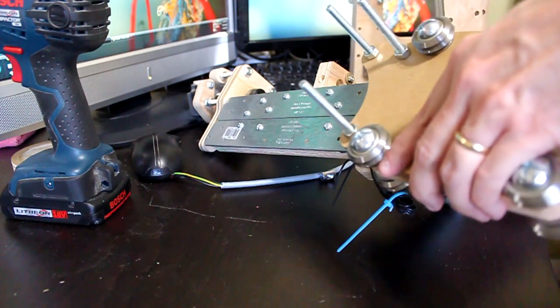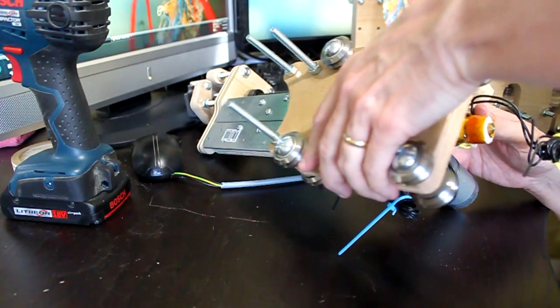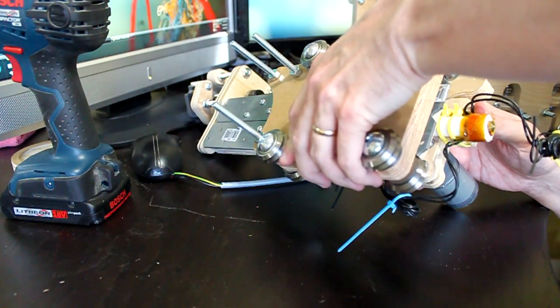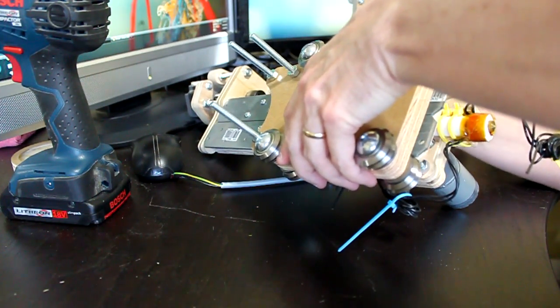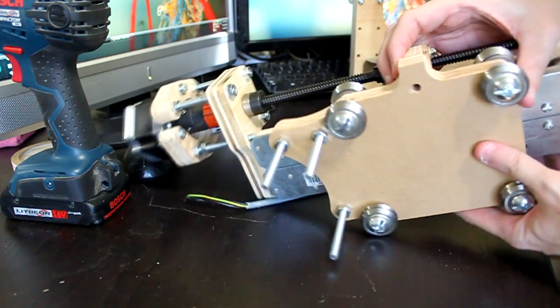Slide the assembled ZY plate onto the Z axis assembly that has been created earlier. Thread the lead screw into the anti-backlash nut as you slide on the ZY plate.